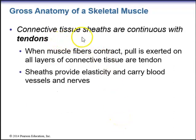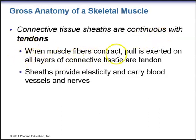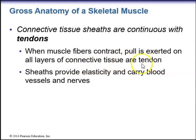The connective tissue sheaths surrounding the entire muscle — the epimysium — are continuous with tendons. When muscle fibers contract, a pull is exerted on all layers of connective tissue, forming a tendon. These sheaths also provide elasticity and carry blood vessels and nerves.